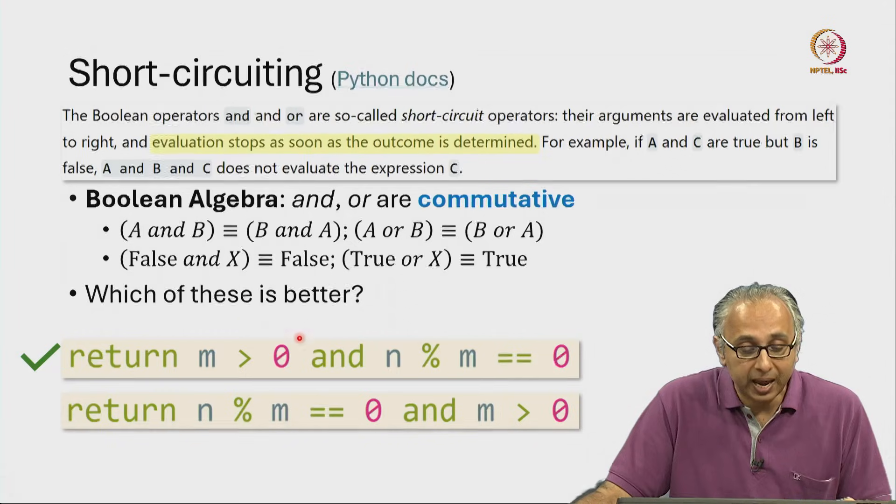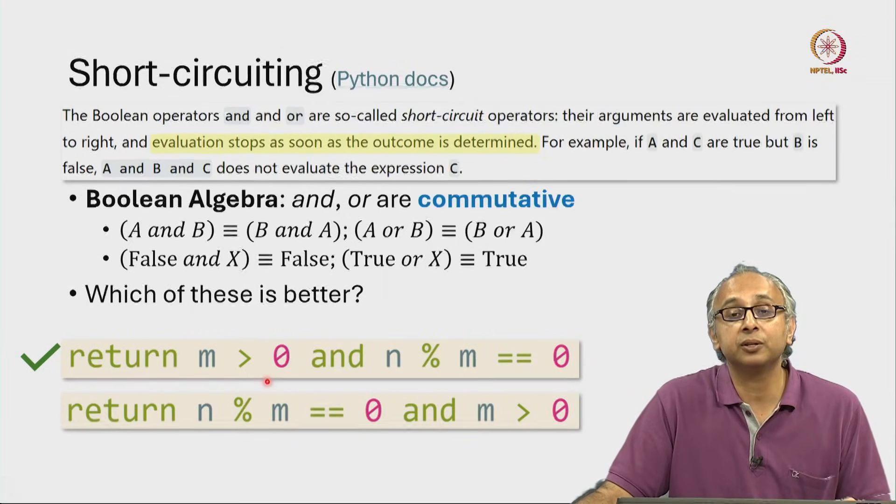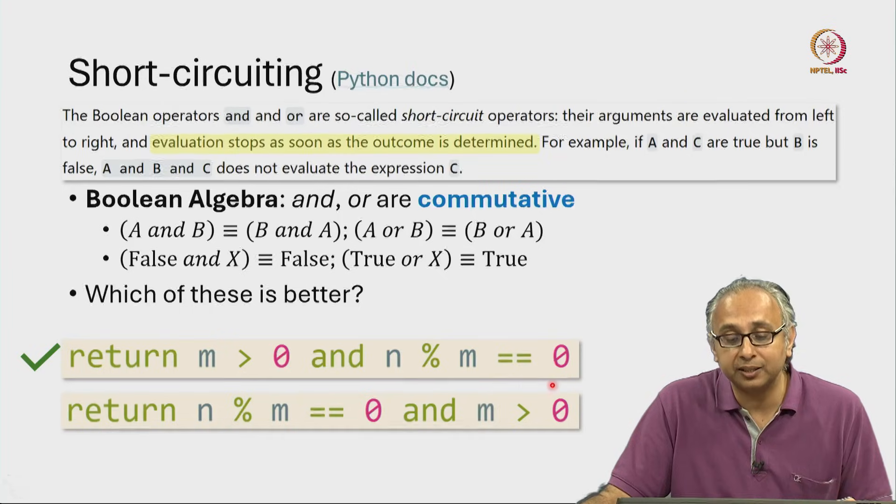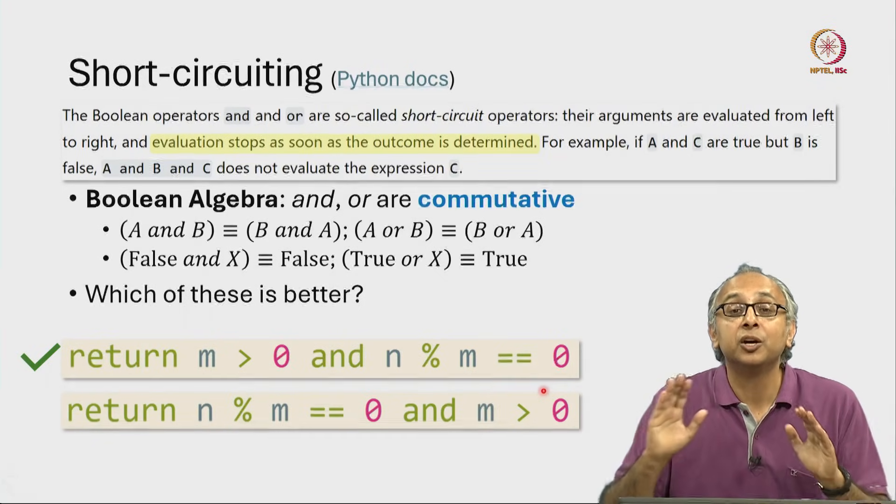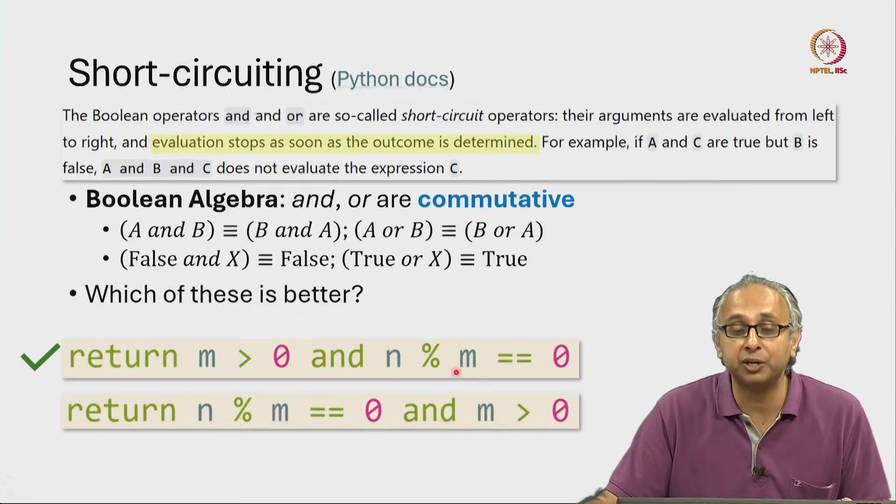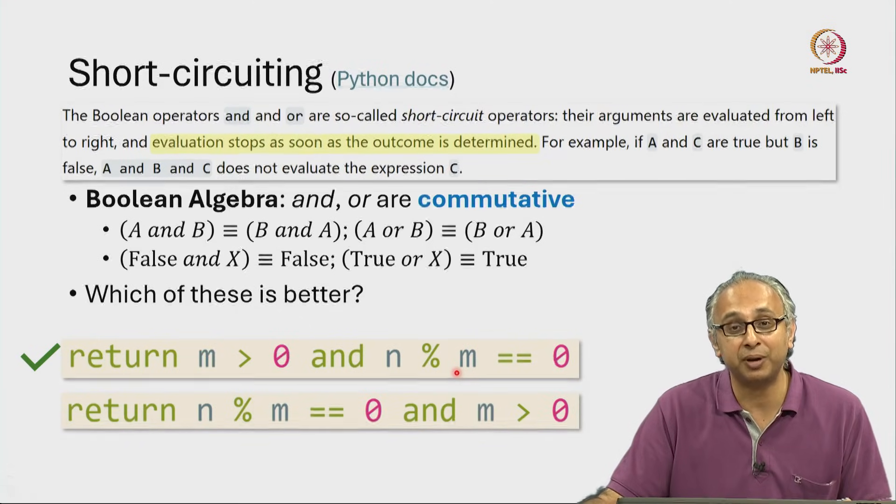If m was zero and we evaluated this condition, it would be false. And then we do not evaluate this expression, which is good because trying to evaluate this expression with m equal to zero is going to cause a divide by zero error.